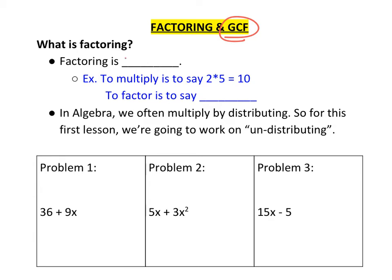To factor is to unmultiply. For instance, to multiply is to say 2 times 5 equals 10. And to factor is to say they give you 10 as the starting problem, and you say 10 equals 2 times 5. That's what factoring does — it's going the other way.